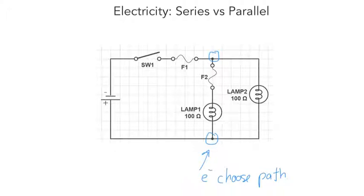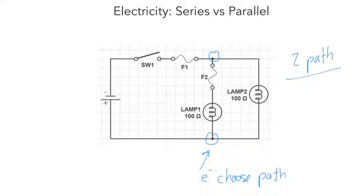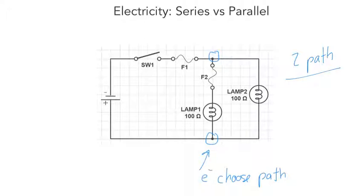In this parallel circuit there are actually two paths. A parallel circuit by definition must have a minimum of two paths — and a maximum, pretty much as many as you desire. We're going to look at another example of a parallel circuit where you'll see the same main characteristic: that the electrons have a choice of where they're going.